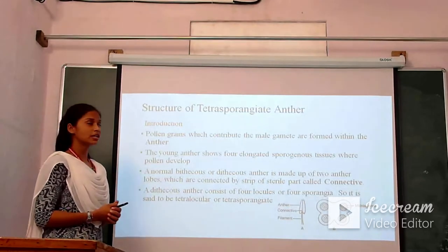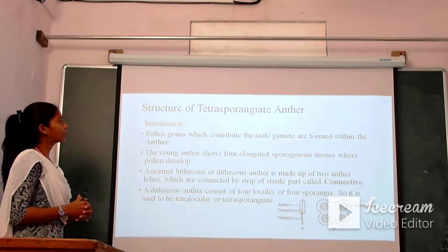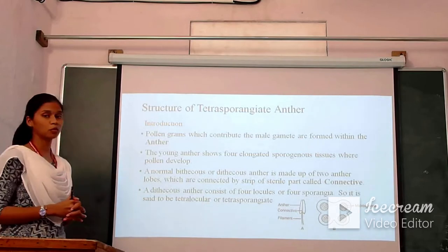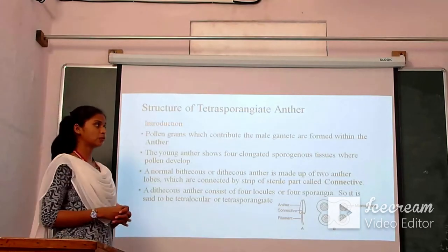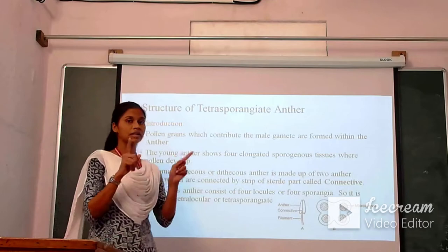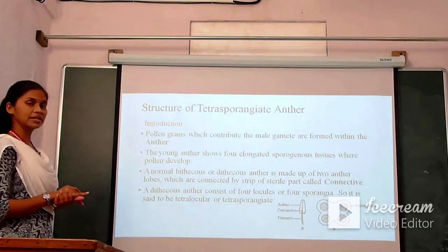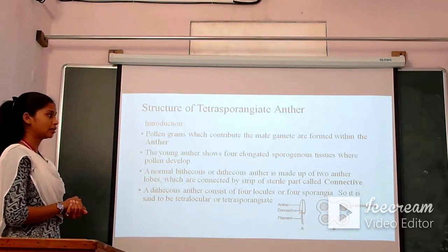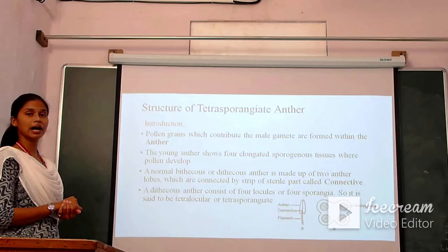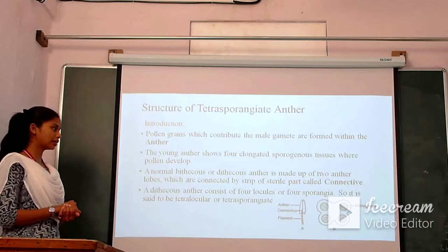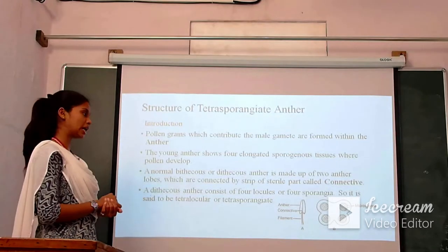Now we will see the structure of the tetrasporangiate anther. Pollen grains, which contribute to the male gamete, are formed within the anthers. The anther shows four demarcated sporoginous tissue regions where pollen develops. In transverse section, the anther shows four pollen sacs where pollen grains develop. A normal dithecous anther is made up of two anther lobes connected by a strip of sterile tissue called the connective. A dithecous anther consists of four locules and is therefore said to be tetralocular or tetrasporangiate.